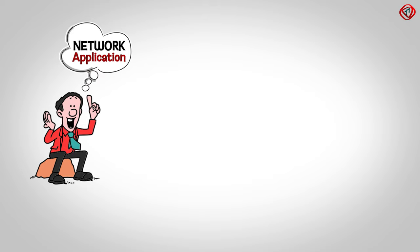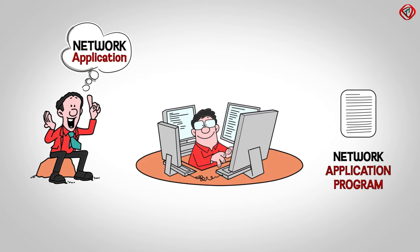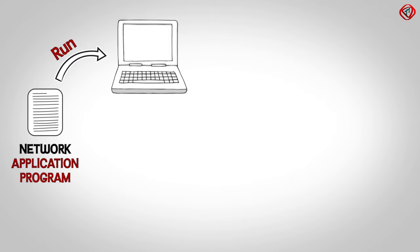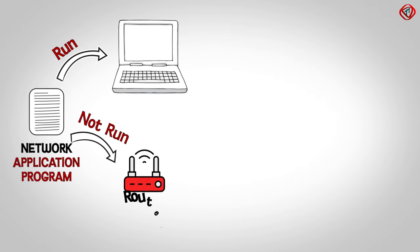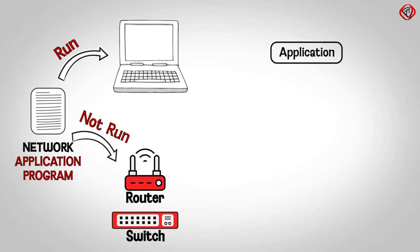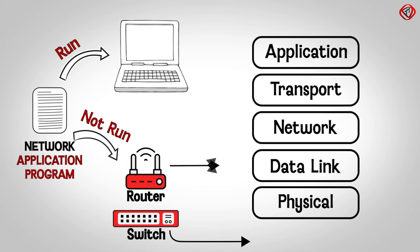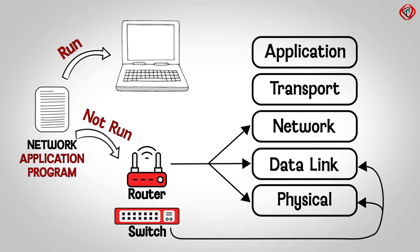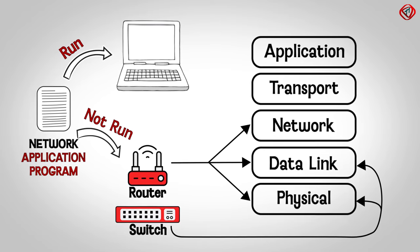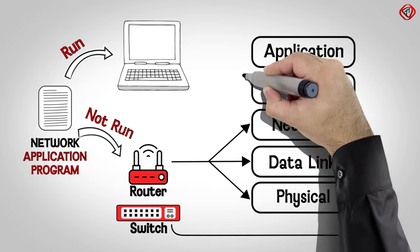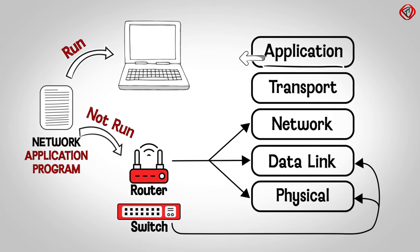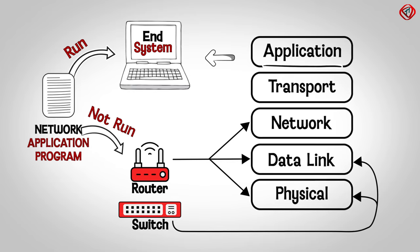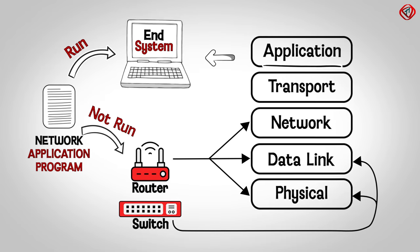If you have an idea for a network application, you will need to write a program. This program will only run on end systems, not on routers and link layer switches, since they mainly work at the network, data link, and the physical layer. Our program will be running at the application layer, which is present only in the end systems. Therefore, network applications run on end systems only.